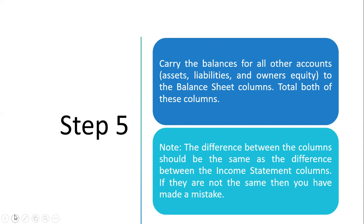The reason the balance sheet columns won't balance is that the difference must come from the income statement columns. When we insert that difference — which is either the profit or loss — on the smaller side of the balance sheet columns, the balance sheet will balance and the debit column will equal the credit column. If they are not equal, then a mistake has been made somewhere.